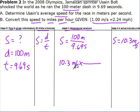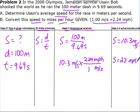The shortcut for unit conversions is 'find over given' — that tells you which unit goes on top in your conversion factor. They want you to find miles per hour, so miles per hour goes on top and meters per second on the bottom. Multiply across: 10.3 times 2.24 gives me 23 and some change miles per hour. So Usain Bolt's speed is approximately 23 miles per hour.